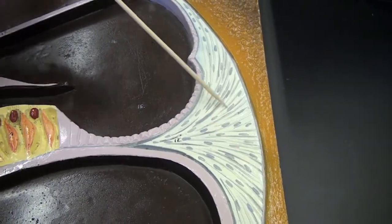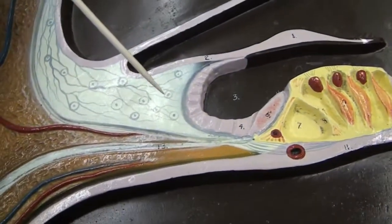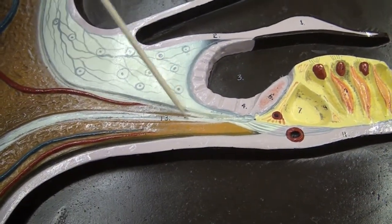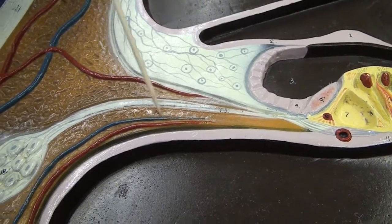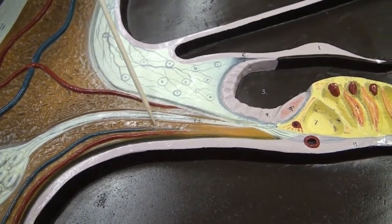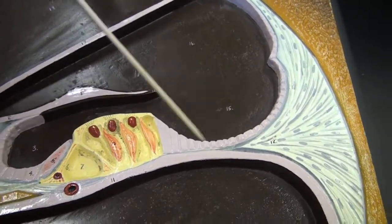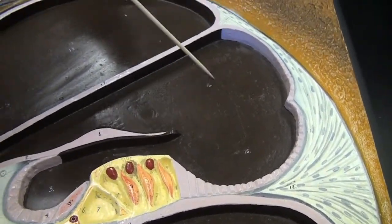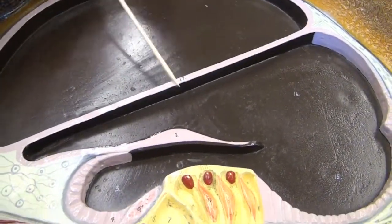Nerve fibers of the cochlear nerve, osseous spiral lamina, external spiral sulcus, cochlear duct, vestibular membrane.